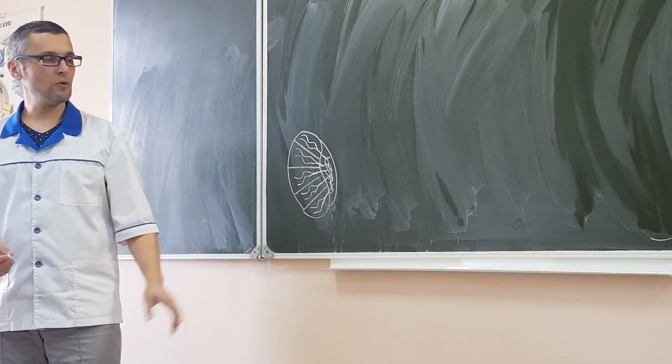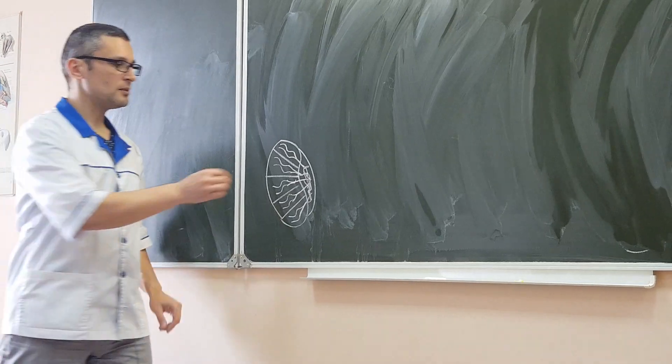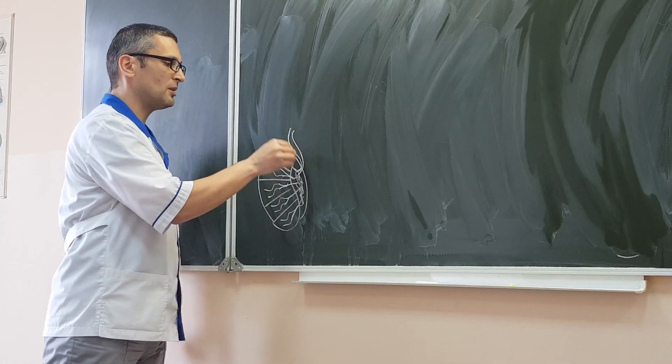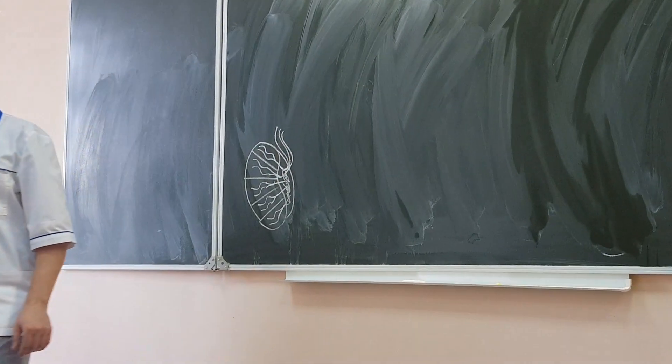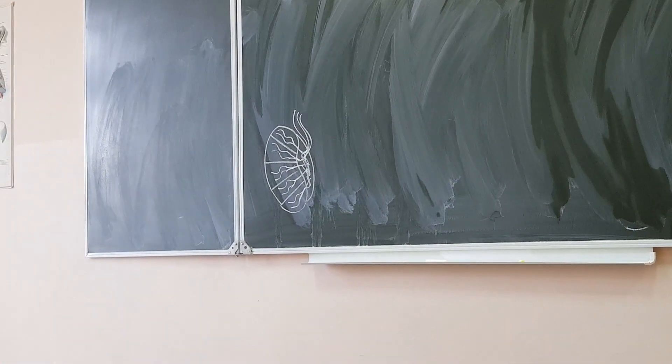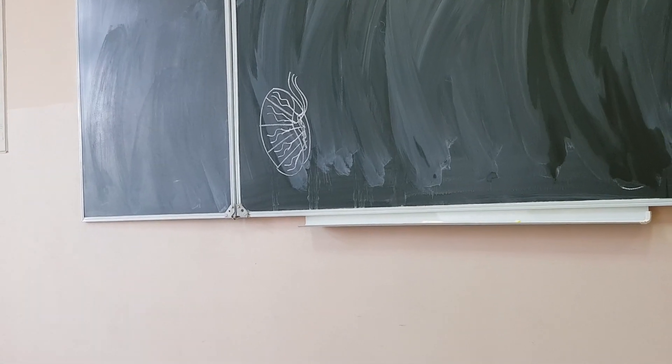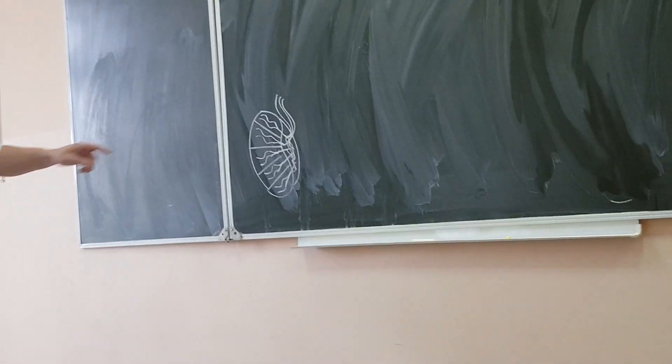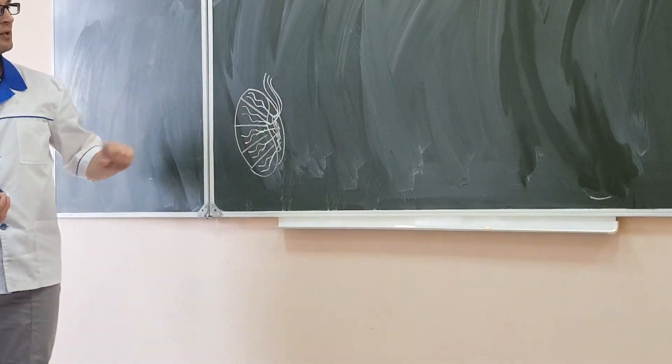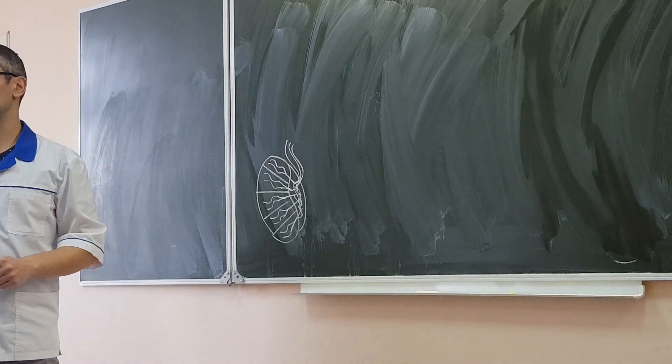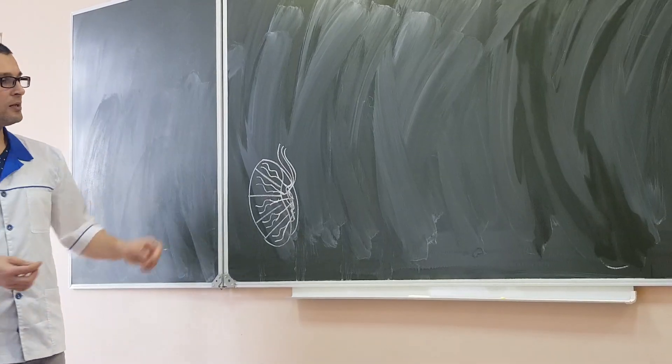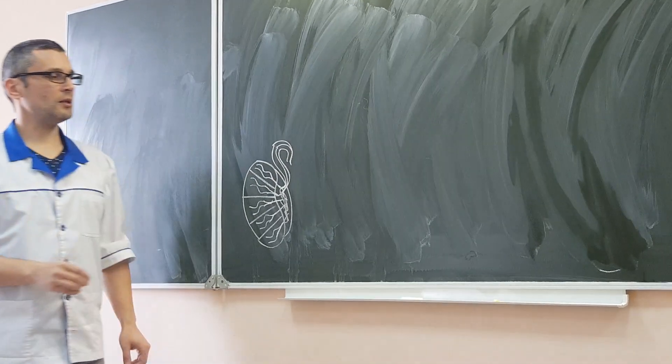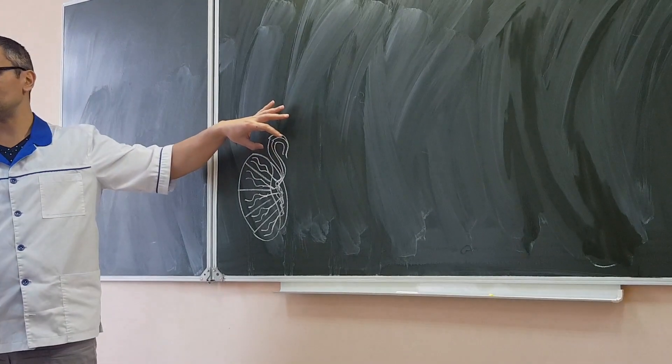Afterwards, spermatozoa leave the testis and go upward. Some ducts go upward and they are called ductuli efferentes. Efferentes means through this duct, spermatozoa go out the testis. And look, these ducts, ductuli efferentes, go to the upper edge of the testis. Then here, they make some flexure, like that, to form caput epididymis.